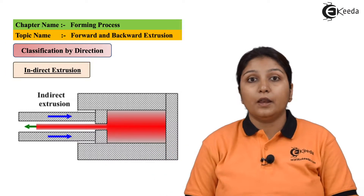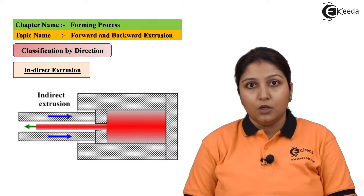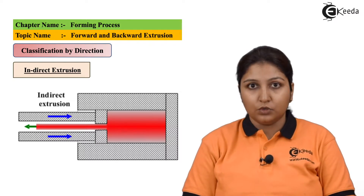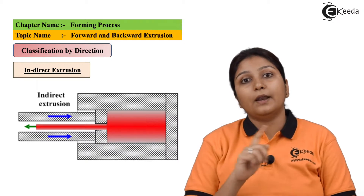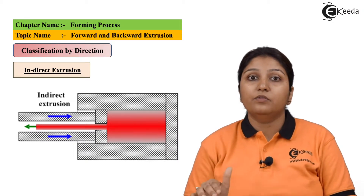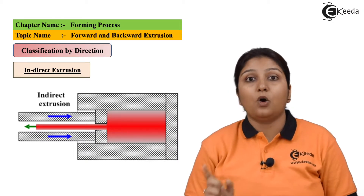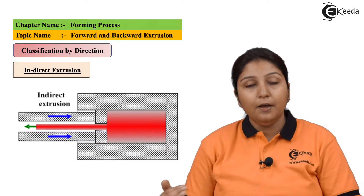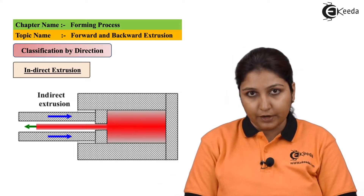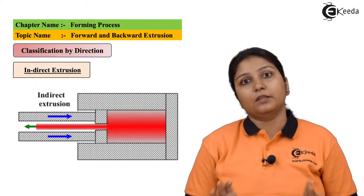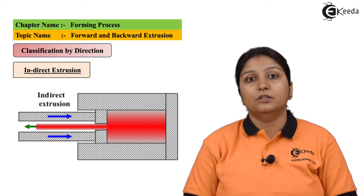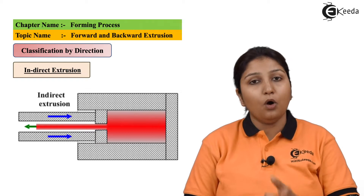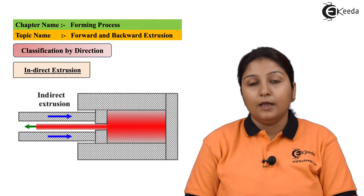This is the diagram of indirect extrusion. What is the difference between direct and indirect? In indirect extrusion, the direction of the ram and the direction of the material coming out is opposite. The ram is going in a different direction; the material is coming out from a different direction. The process is the same — extrusion is done — but the direction is different. That is why it is known as backward or indirect extrusion.